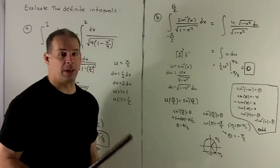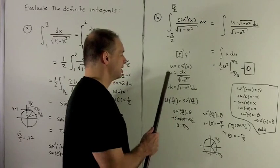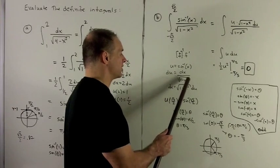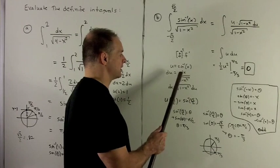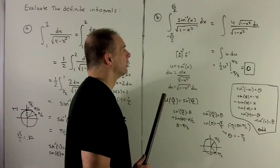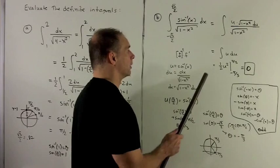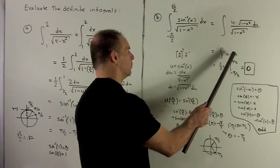So I'm going to let u be equal to the inside. That's going to be my function, which is sine inverse of x. du is dx over radical 1 minus x squared, the derivative of this times dx. And then I can push the radical to the other side. We substitute into the integral, and we see that the radicals cancel, leaving me with integral of u du.